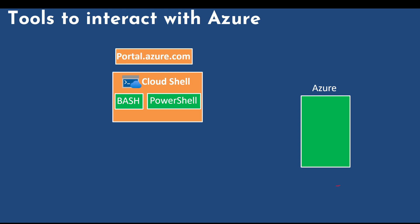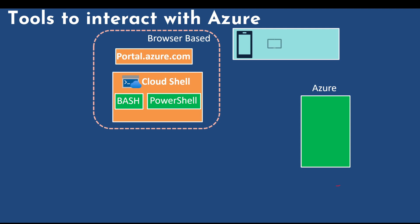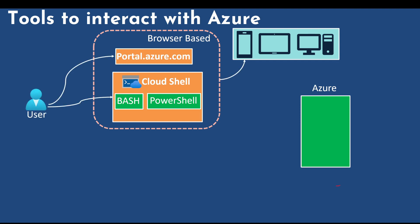Azure portal and Cloud Shell are both browser-based utilities, which means you can use these to access Azure resources from any device that has a web browser, such as a phone, a tablet, or even a computer, irrespective of their operating system. For instance, if you want to provision a virtual machine using your mobile phone, you can use either of these methods to do so.